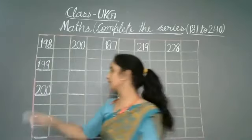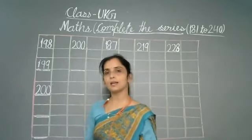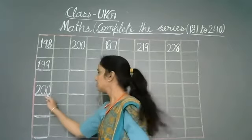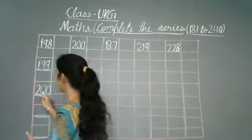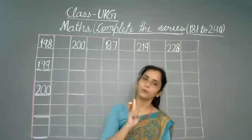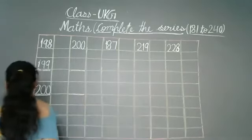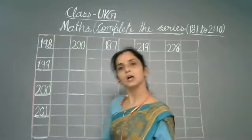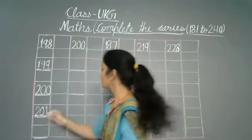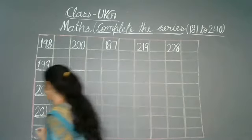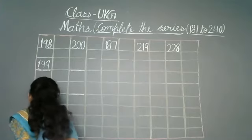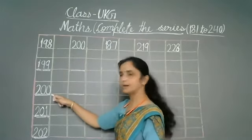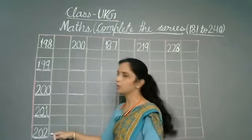Now what comes after 200? Think that we don't have anything, so we start counting. We start with 1, then it comes after 0. Here it comes after 0, then it comes after 1. So what comes after 200? 201. Then 202.